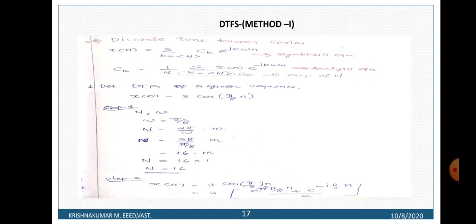The analysis equation is: c_k is equal to 1 over N, times sigma, k ranging over any range of N, times x of n times e raised to minus j·k·omega·n.